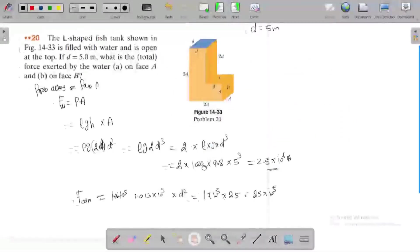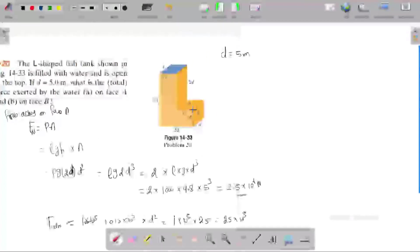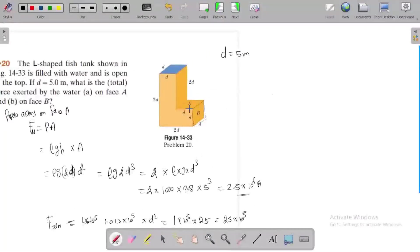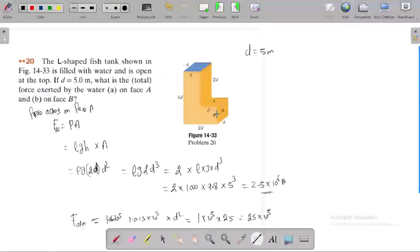We know the net force concentrated on the centroid, center point. This is the direction of force acting at the center point. Total height d here, this is d by 2. What is this line? This total length is 3d.